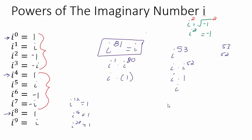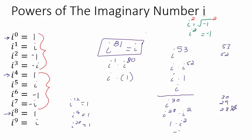Let's try i to the 30th. The biggest number less than 30 divisible by 4 is 28. So I split this as i to the 28th times i squared. i to the 28th, since 28 is divisible by 4, is 1. So I have 1 times i squared, which is negative 1. Therefore i to the 30th is negative 1.